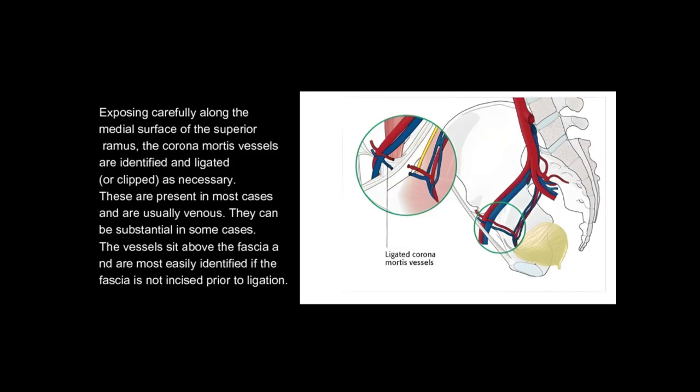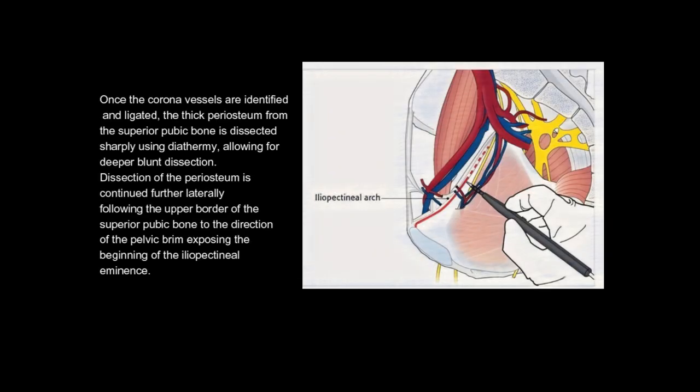The vessels sit above the fascia and are most easily identified if the fascia is not incised prior to ligation. Once the corona vessels are identified and ligated, the thick periosteum from the superior pubic bone is dissected sharply using diathermy, allowing for deeper blunt dissection. Dissection of the periosteum is continued further laterally, following the upper border of the superior pubic bone toward the pelvic brim, exposing the beginning of the iliopectineal eminence.